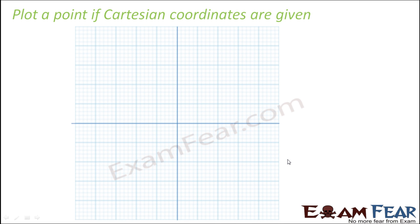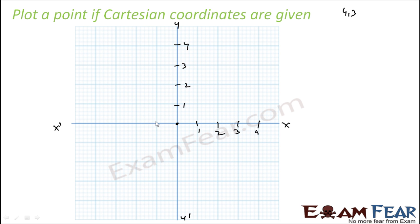Let's suppose we want to plot 4 comma 3. First let's set up the axes as per the Cartesian system. This is 0, this is the x-axis, this is the y-axis. We mark 1, 2, 3, 4 on the positive x side, minus 1, minus 2, minus 3, minus 4 on the negative side, and similarly for y.